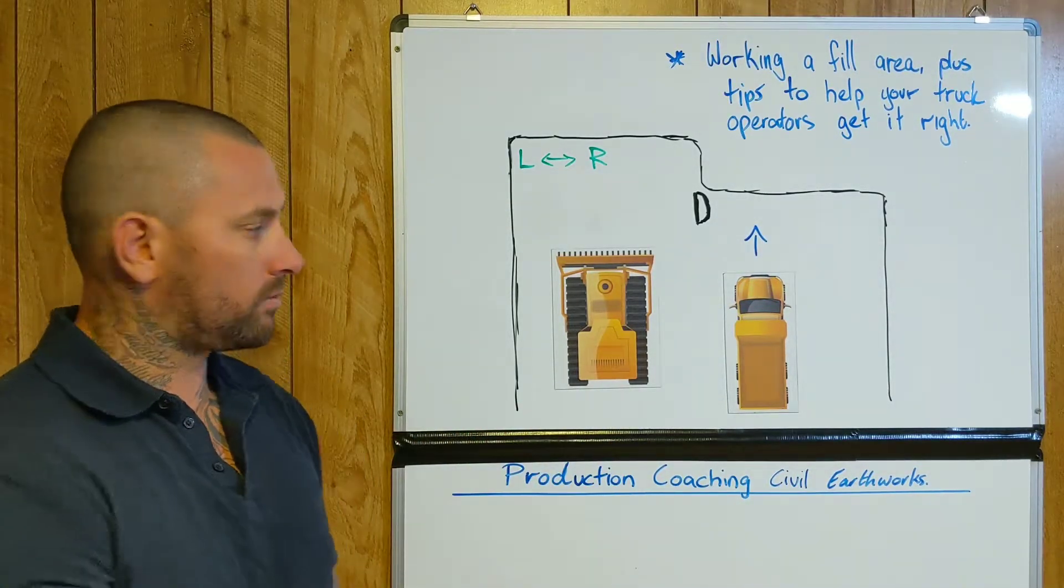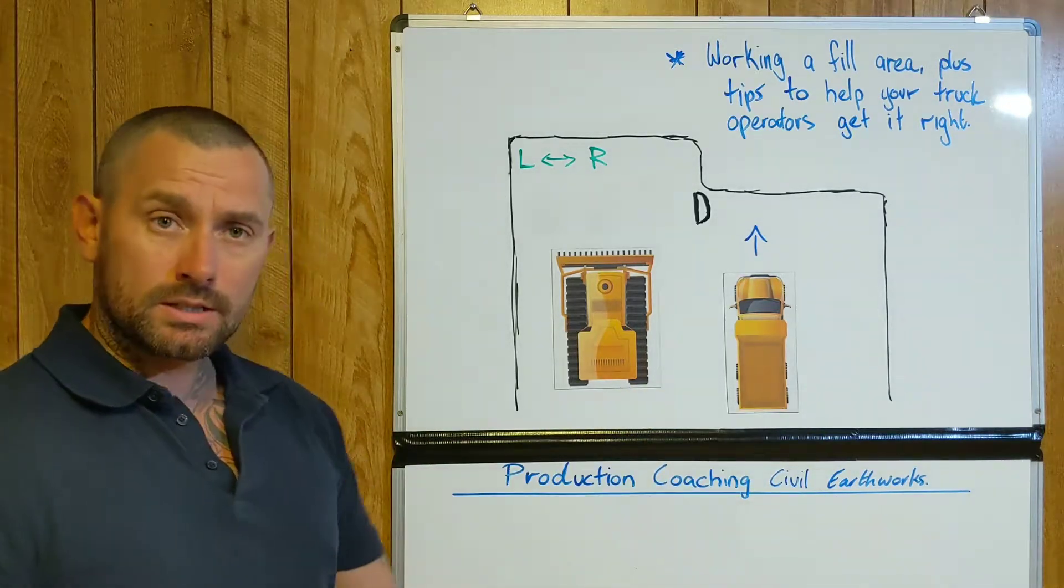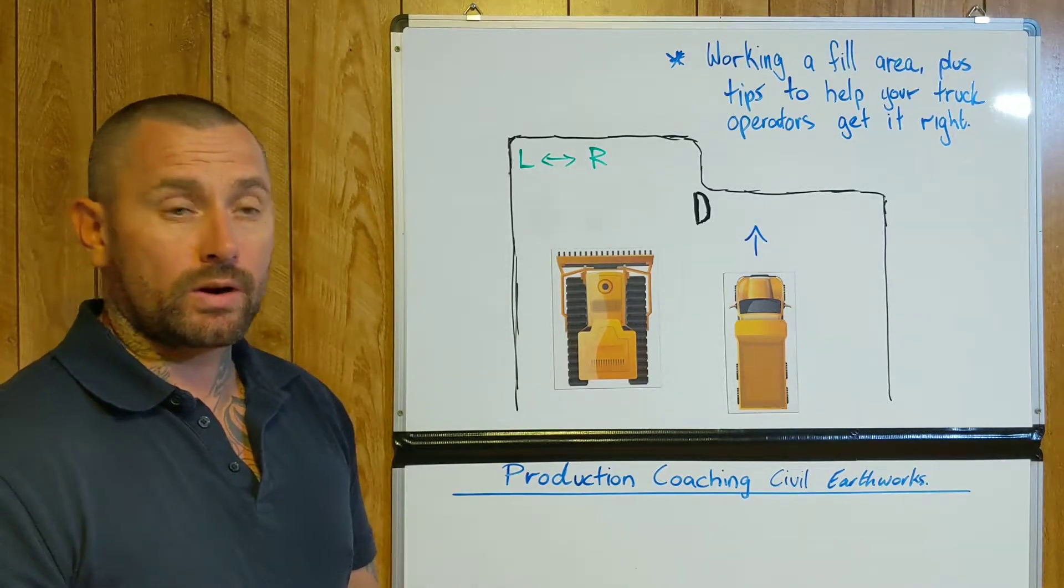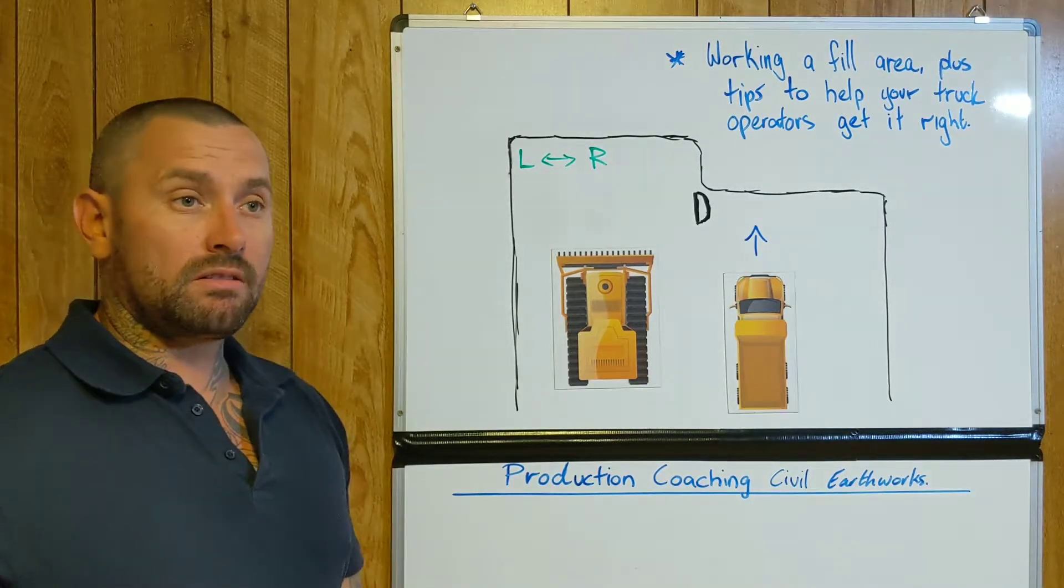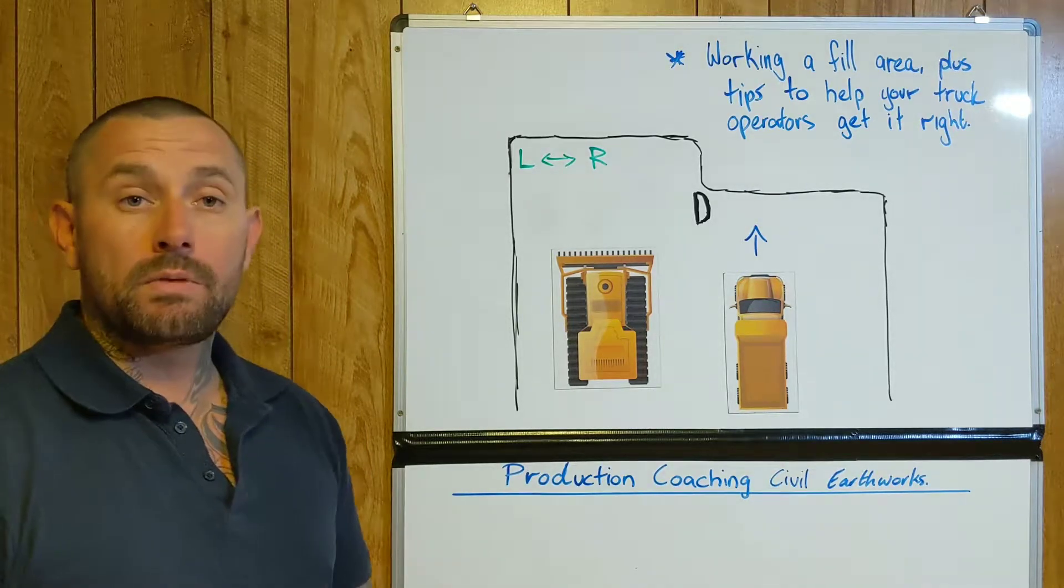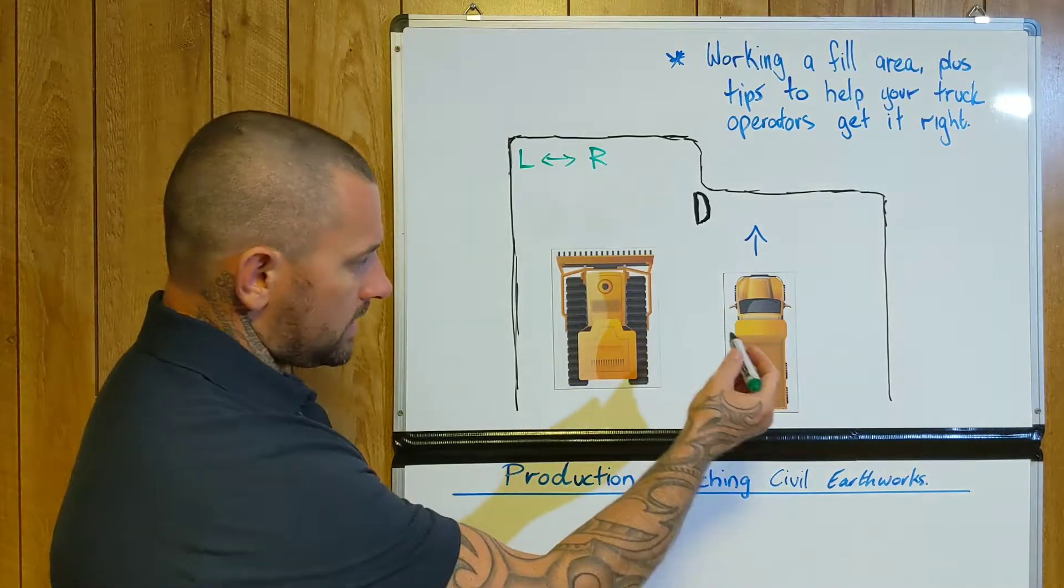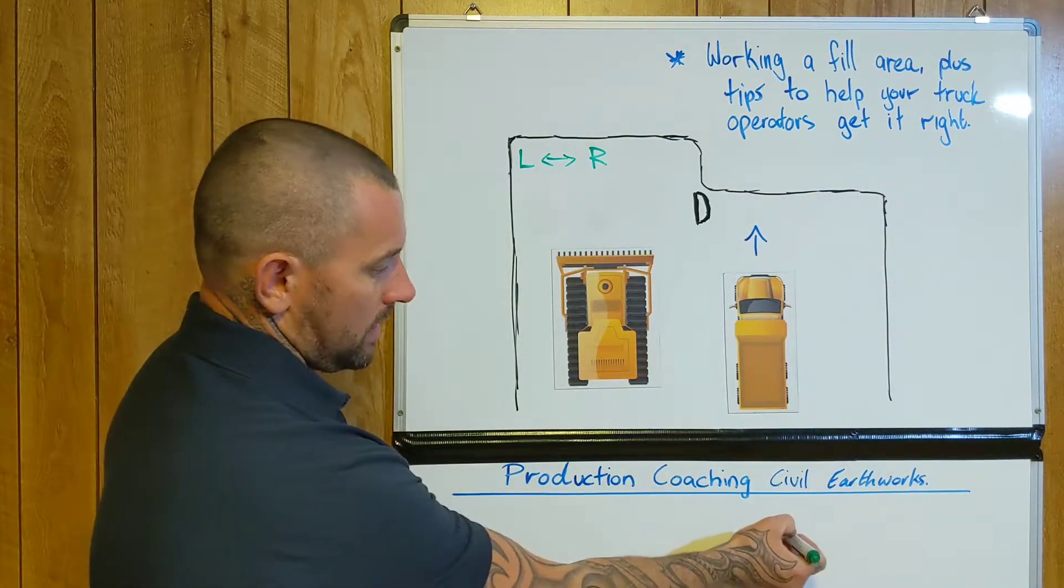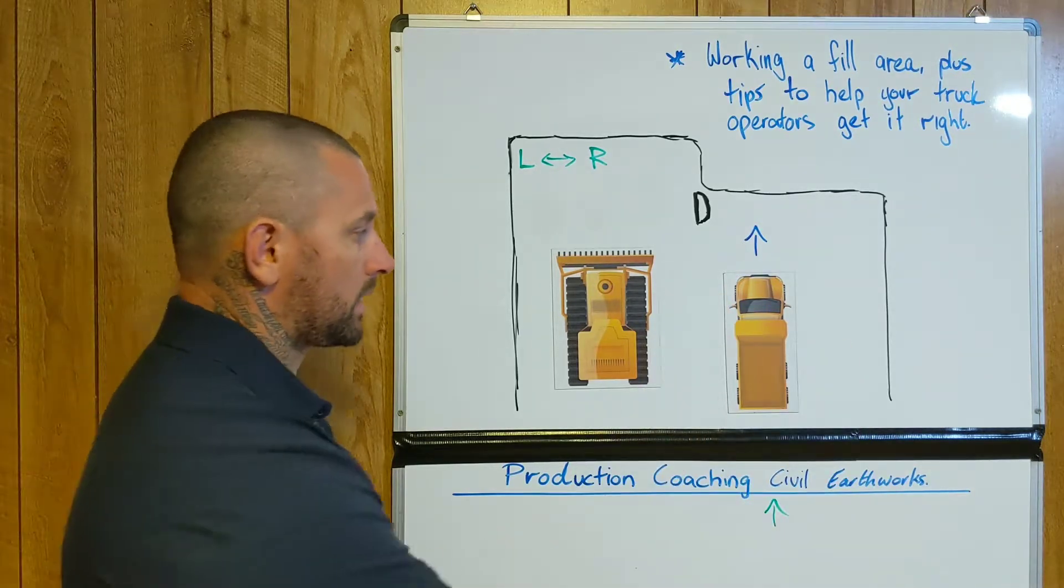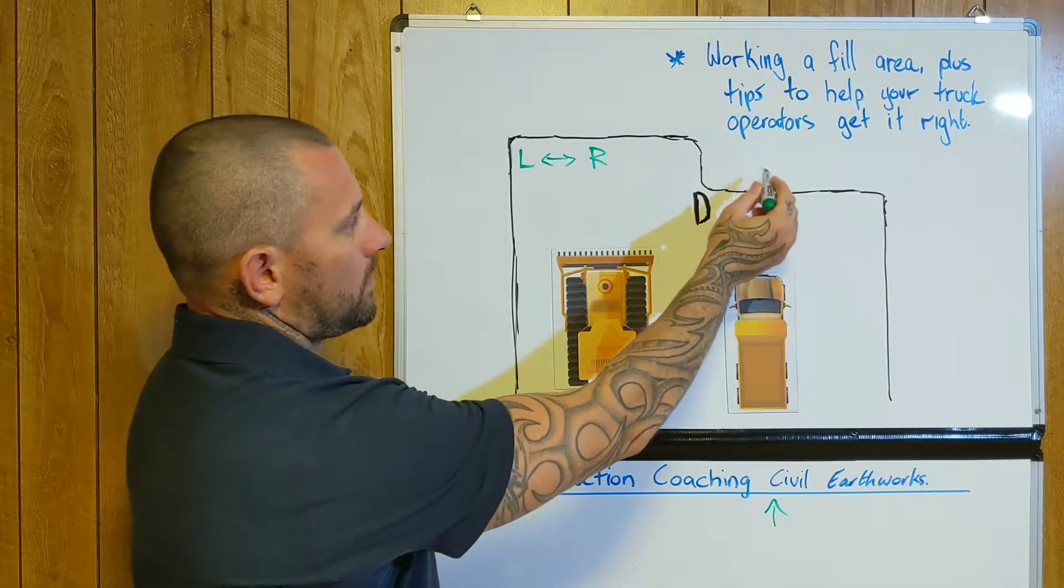If you've got 10 operators coming at you tipping off, you'd be surprised - they actually start working out how you operate. They could be half a kilometer away and see where you're working, and they'll have an idea of which direction they're going to be coming on the fill. In this case, let's say the truck operators are able to come in from behind on the fill.